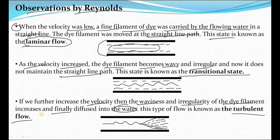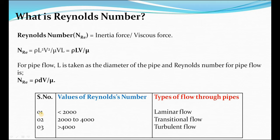Now we will discuss about Reynolds number. Reynolds number tells us about laminar flow, transitional flow, and turbulent flow, which we saw in the experiment. Reynolds number is a dimensionless number — it does not have any unit — and it is the ratio of inertia force to viscous force.